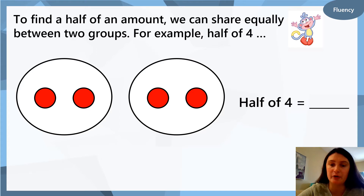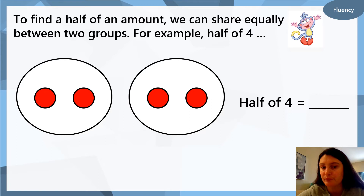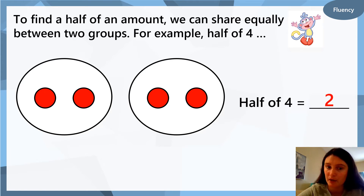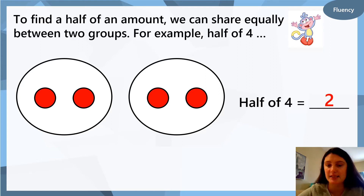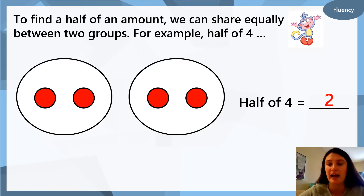So half of four is how many are in one circle? That's right — two. We always make sure we have two circles and we do however many dots we're looking to find half of. So half of four is two. Excellent.